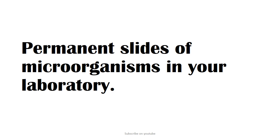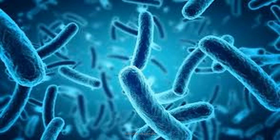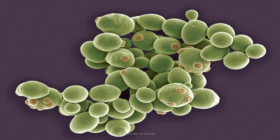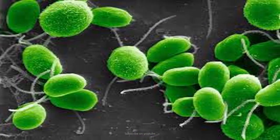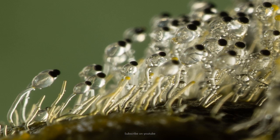You can observe some permanent slides of microorganisms in the laboratory. I'm going to show you the permanent slides of microorganisms. You can see in the laboratory: this is bacteria on a permanent slide, yeast, an algae species called Chlamydomonas, and a fungal variety called Mucor.